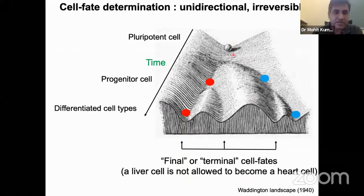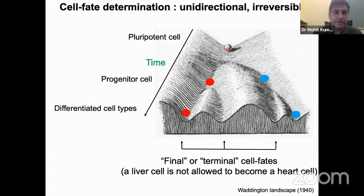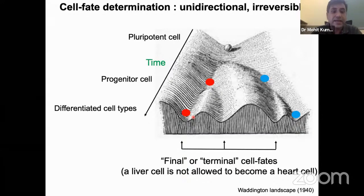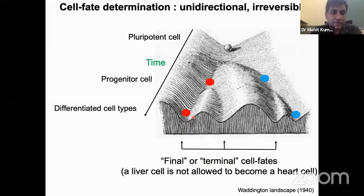Imagine a ball on an undulating landscape representing a cell. As time progresses, the ball rolls down and eventually settles in one of the valleys — these valleys are the final cell types in our body. Once a cell has become a liver cell, for instance, it won't overnight become a heart cell. It stays a liver cell throughout its lifetime. This is a relatively irreversible and unidirectional process — that's how we have been thinking about it.